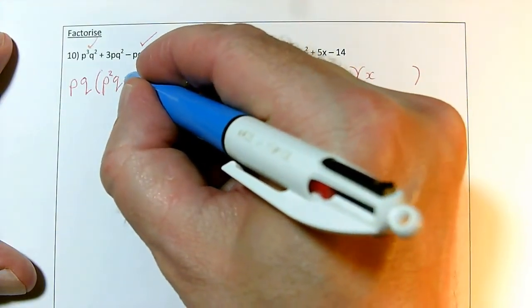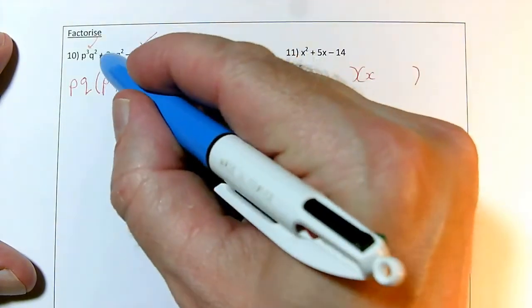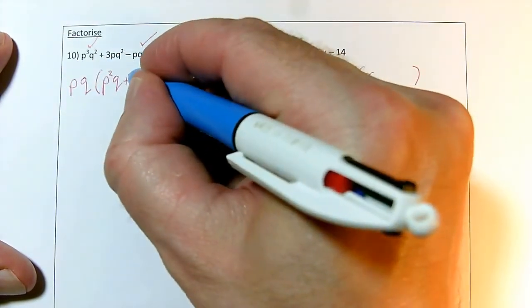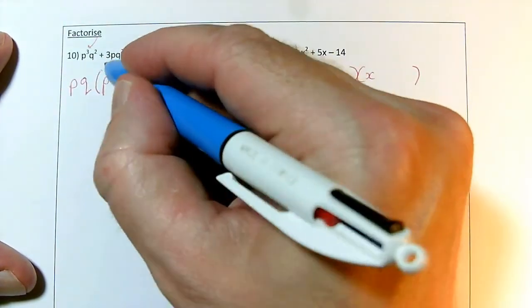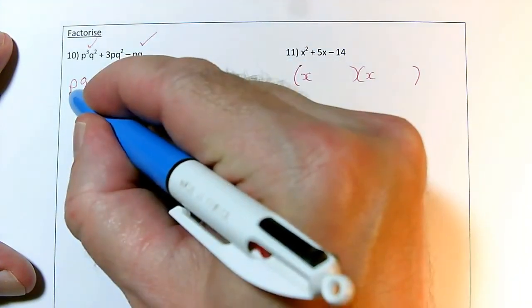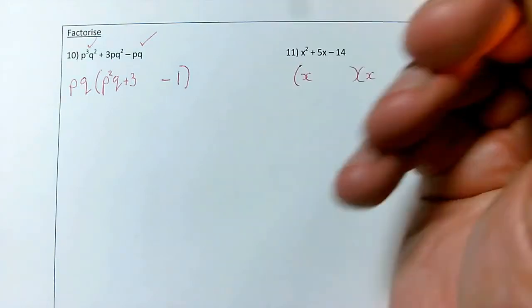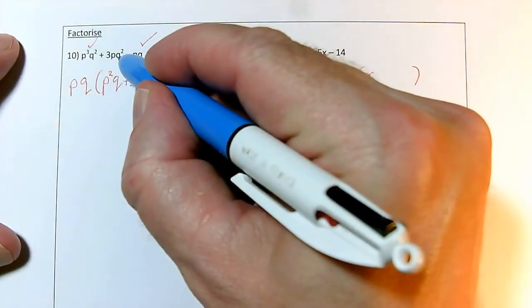So for the middle term, I'm going to need plus. I need a 3. Well, I haven't got any numbers at all yet, or I've got a 1, if you prefer. So I'm going to need a plus 3. I want a p, but I've already got a p outside, so I don't need any more p's, because that would give me p squared or more, and I don't want that. But I do need to make a q squared.